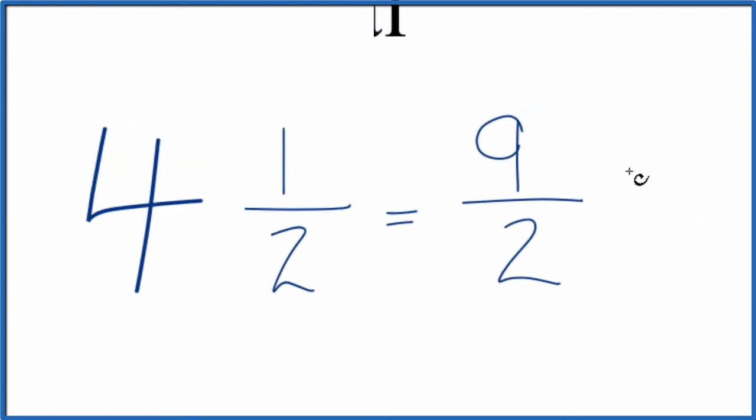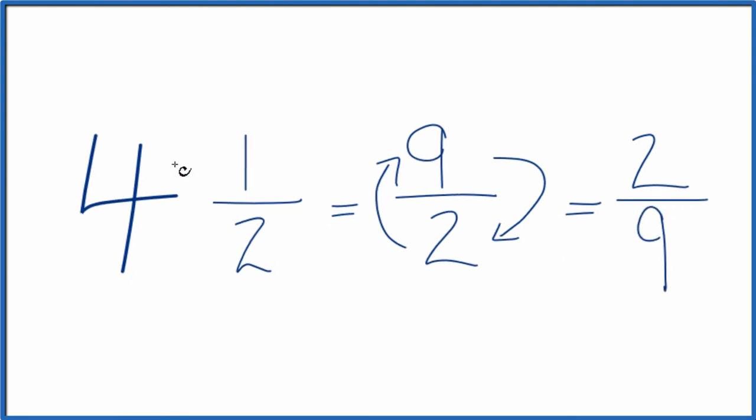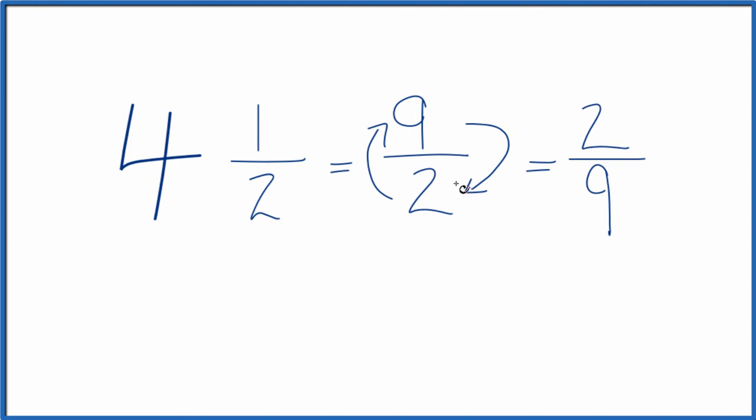Now when we take the reciprocal of a fraction, we move the numerator to the bottom, the denominator to the top. So we end up with 2 as our numerator and 9 is the denominator. This is the reciprocal for 4 and 1 half and for 9 over 2 as well.